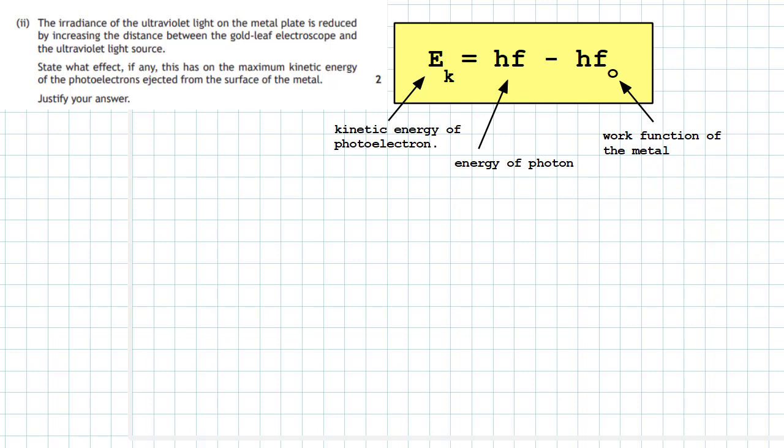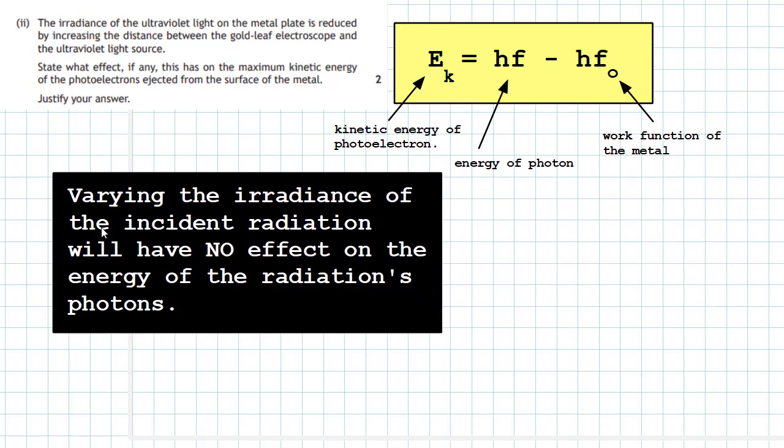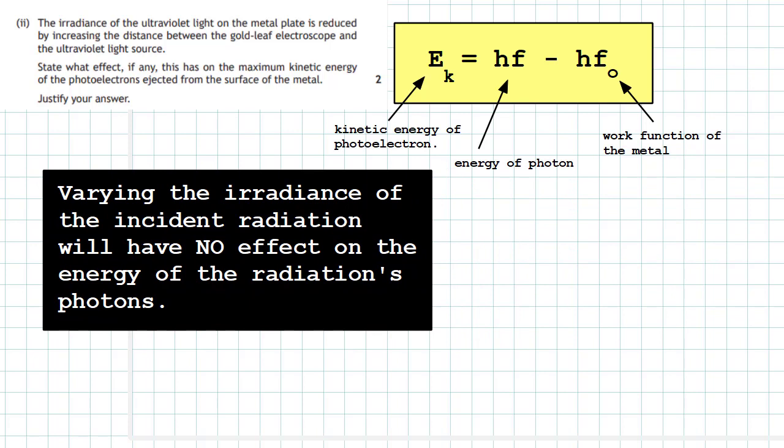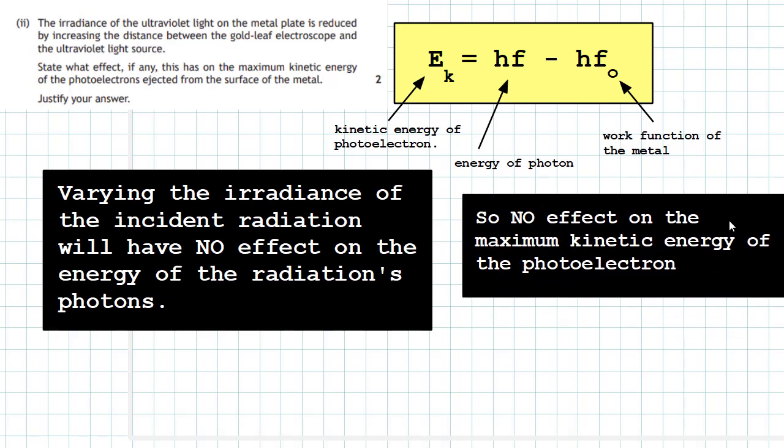Now, look closely at that equation and you can state that there's no mention of the irradiance in that equation. The kinetic energy in the photoelectric effect just depends on the energy of the incoming photon and the work function of the metal. It's nothing to do with the irradiance of the ultraviolet light. So what we can say here is that varying the irradiance of the incident radiation will have no effect on the energy of the radiation's photons. So there will be no effect on the maximum kinetic energy of the photoelectron which is emitted from the surface.